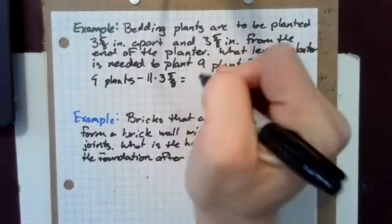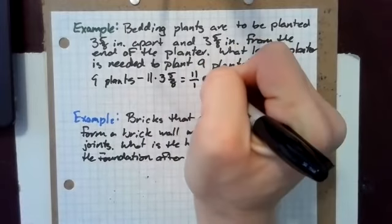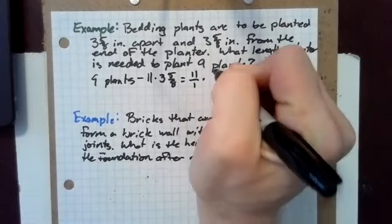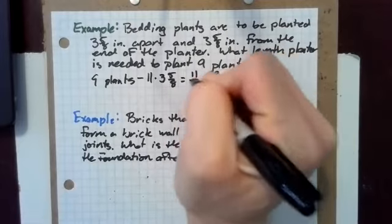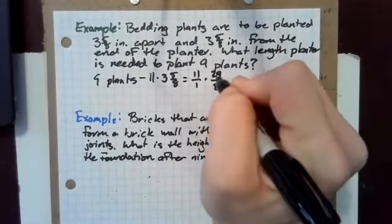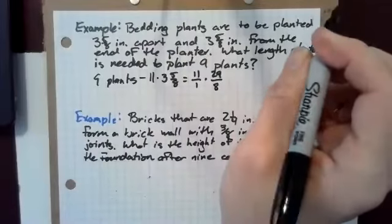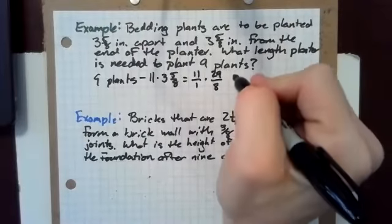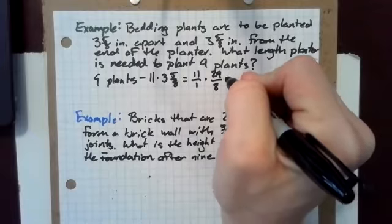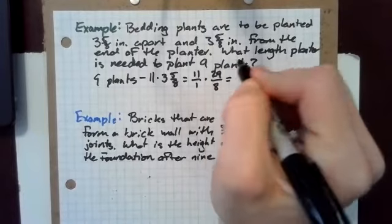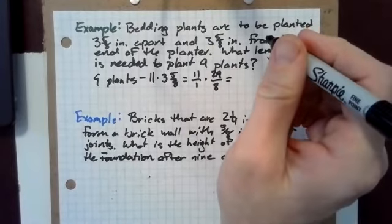So 11 is 11 over one and three and five eighths is 29 eighths. Well, as it happens, both 11 and 29 are prime. So there's nothing for us to cancel here. We wind up with 11 times 29 is...